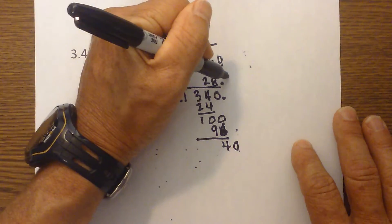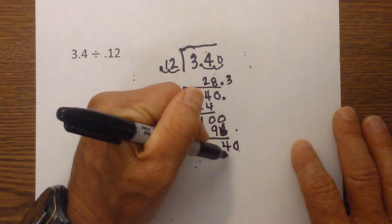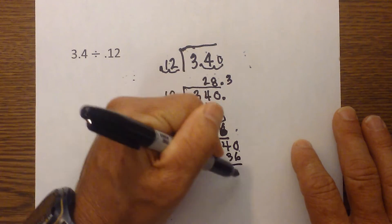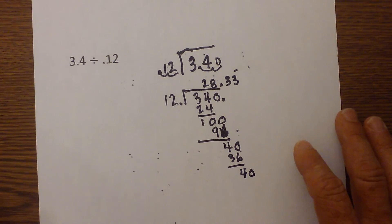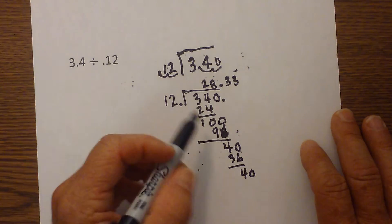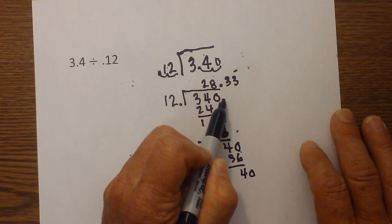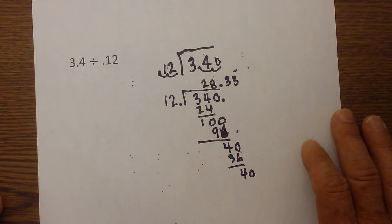12 will go into 40 three times, which is 36. And you'll see from here you get a repeating fraction. So it becomes 28.33. Notice how I moved the decimal up there so you could visually see that.